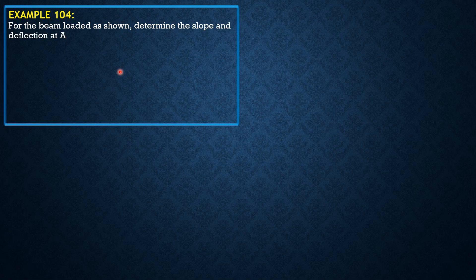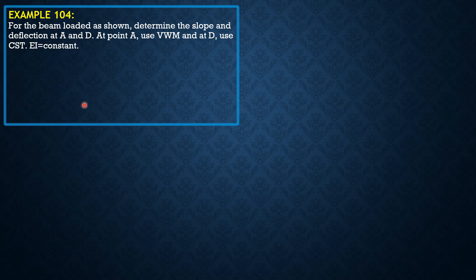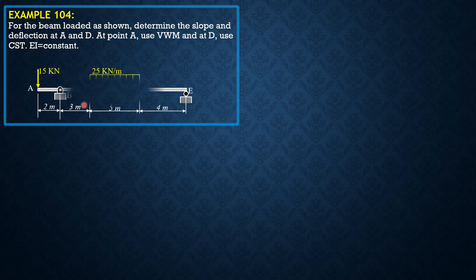Here is the problem on energy methods for the beam loaded as shown. Determine the slope and deflection at A and D. At point A, use the virtual work method, and at D use Castigliano's second theorem. EI is constant.